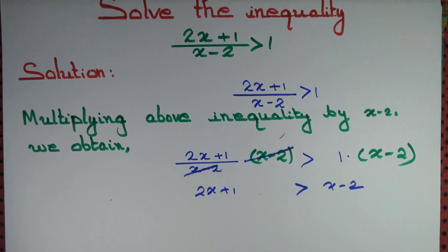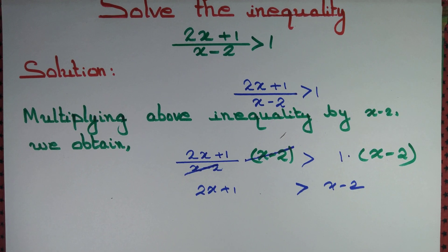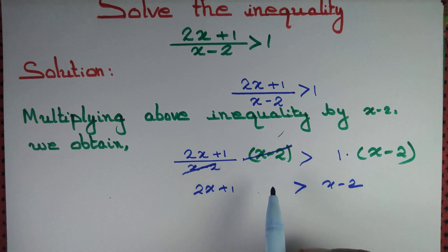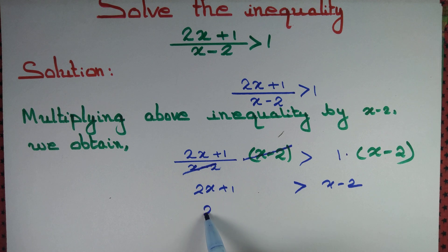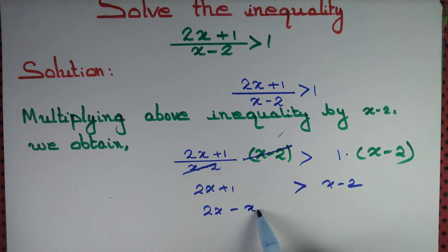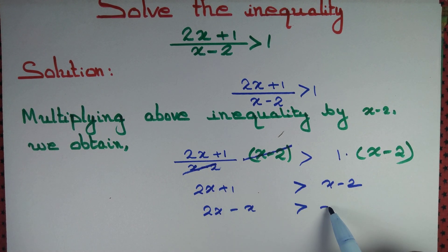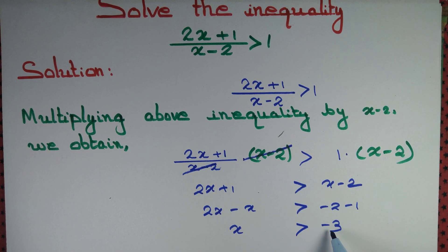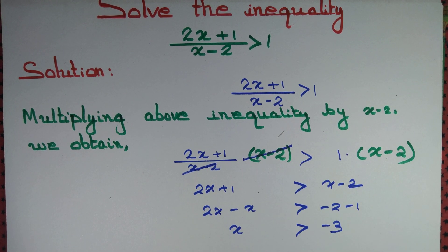Now let's put all variables to the left hand side and all constants to the right hand side. We get x is greater than minus 3.